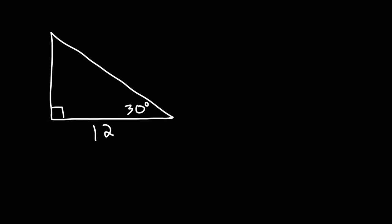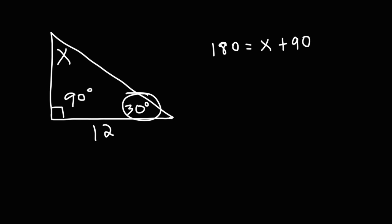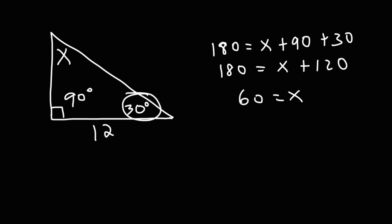The three angles of a right triangle must add up to 180 degrees. This angle is 30 and this is a right angle which is 90, so the missing angle X is what we need to find. 180 equals X plus 90 plus 30. Since 90 and 30 is 120, subtracting 120 from both sides gives us X = 60 degrees.